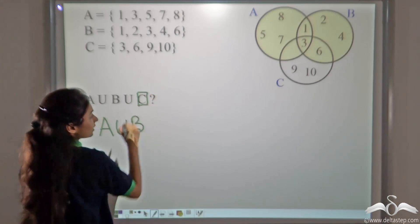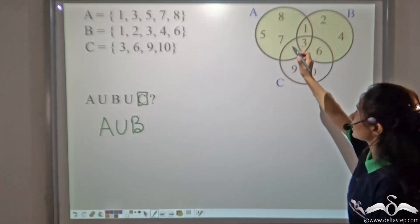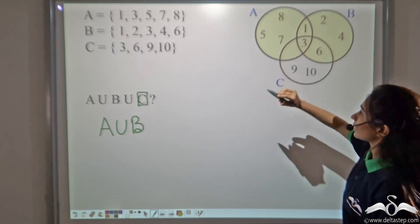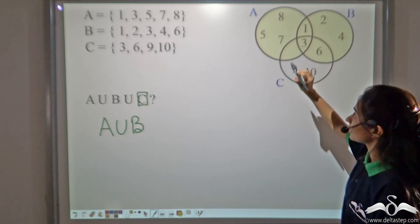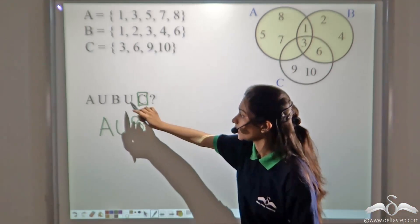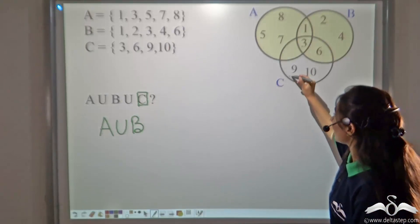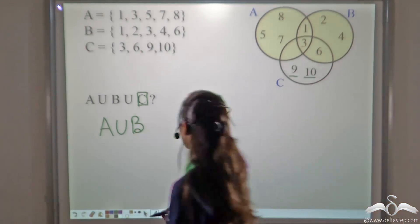What we will do is we will add the elements present in C. When we took out A union B, we did not write the elements that are present in C. So when we do A union B union C, we will add the elements 9 and 10 to this set.